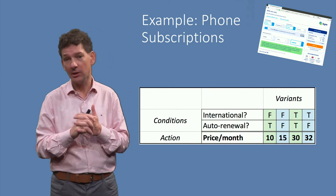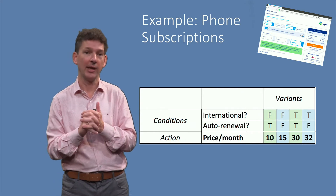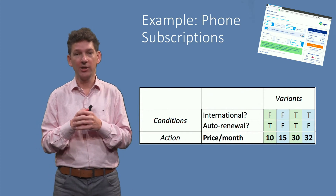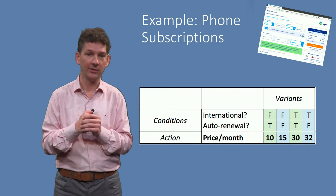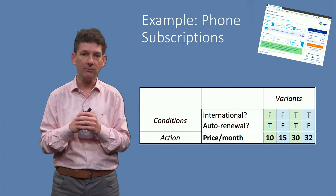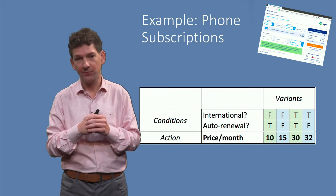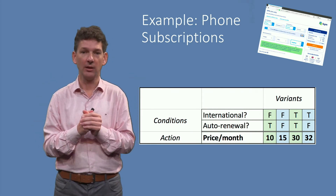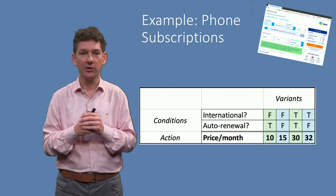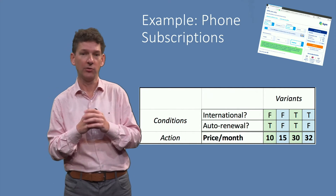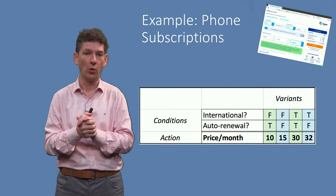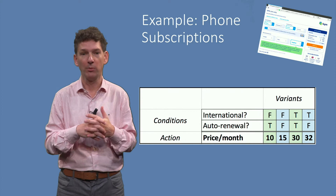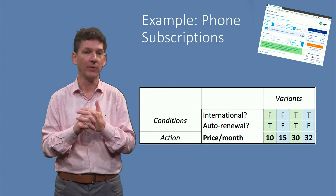At the bottom, in bold, we see the actual outcome, or the action, as determined by the conditions. In this case, the outcomes are different monthly prices. Multiple action columns can be added, but here we have listed just one. The columns, green and blue at the right, give the different variants, also called rules, of the decision table. In this case, there are four. The first variant describes the cheapest subscription, 10 euros per month, limited to national usage, and with an obligation to automated renewal. The fourth column is the most expensive one, 32 euros per month, with usage across the world, and the possibility to cancel any moment.